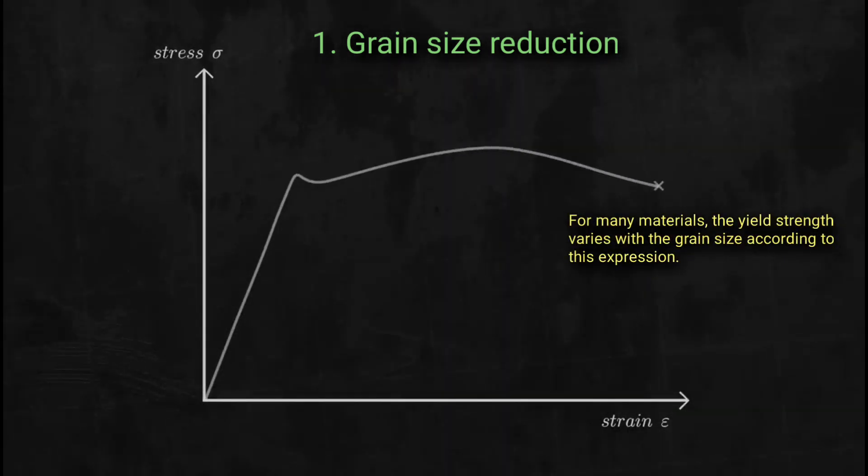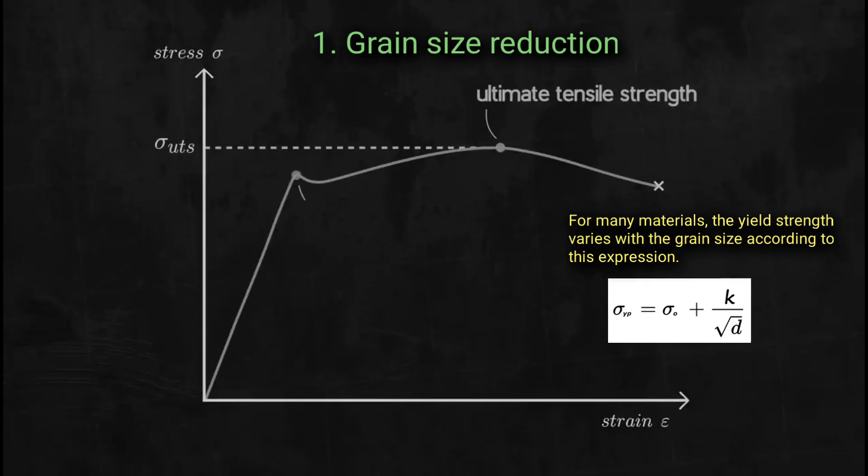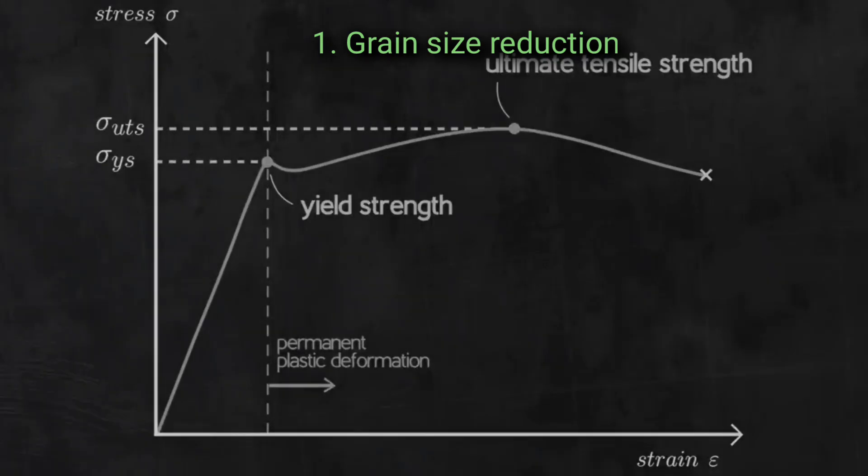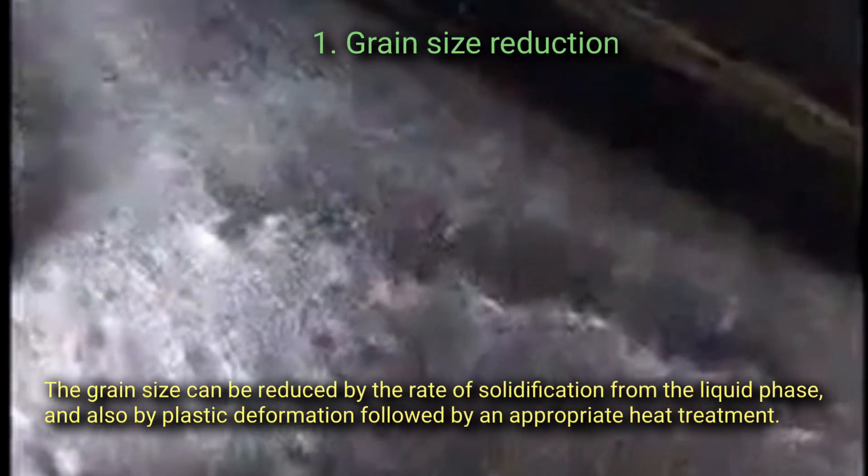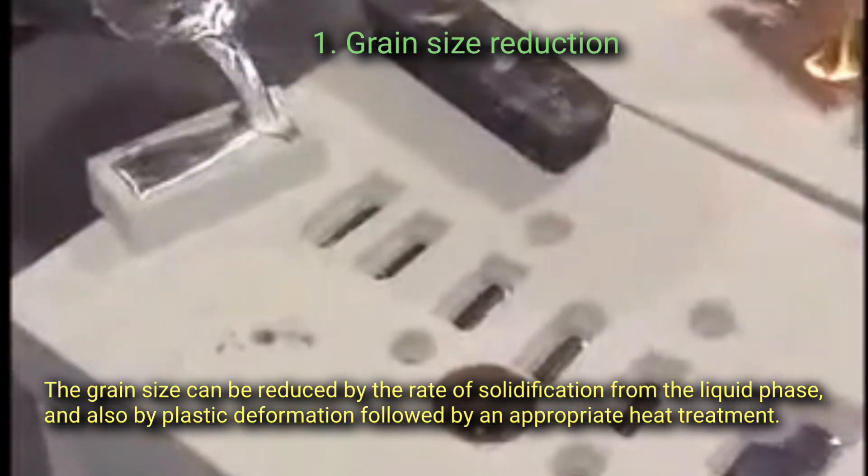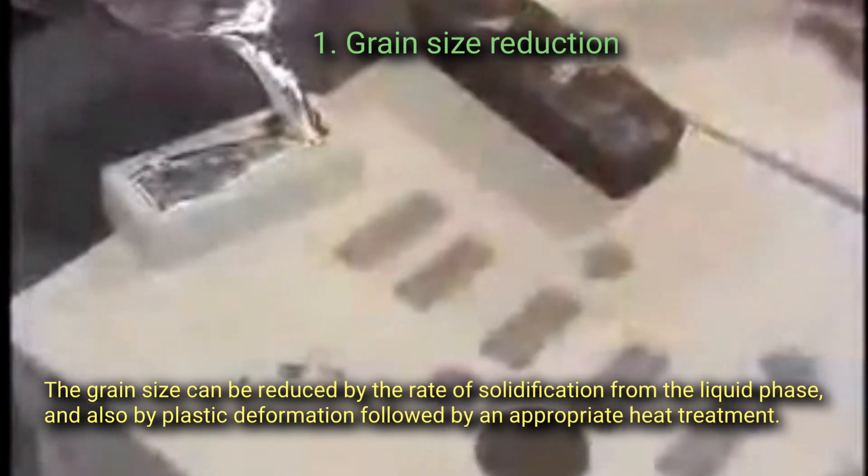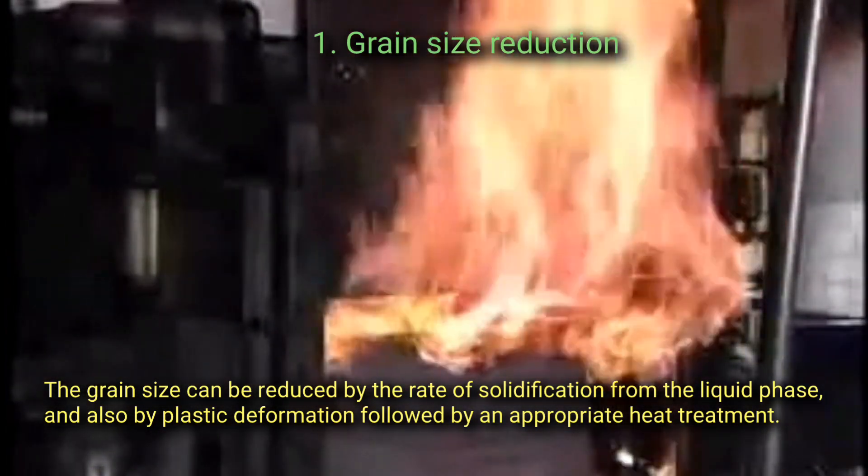For many materials, the yield strength varies with the grain size according to this expression, termed the Hall-Petch equation. The grain size can be reduced by the rate of solidification from the liquid phase and also by plastic deformation followed by an appropriate heat treatment.